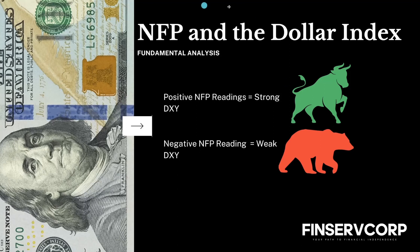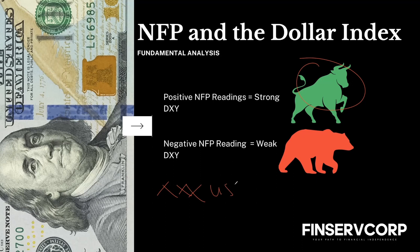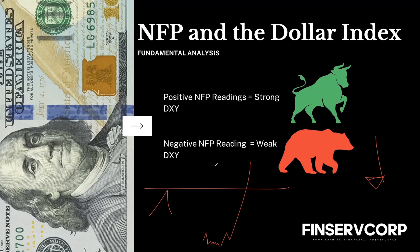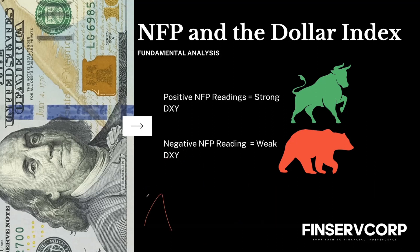Always remember: just because we get a bullish NFP reading does not mean that an XXX/USD pair should go down immediately. For example, if there's buy-side liquidity above and EUR/USD is trading below it — upon NFP release, the news is good for the Dollar Index, meaning EUR/USD should go down — but instead it spikes up first. That's fine, because price cannot move without liquidity.